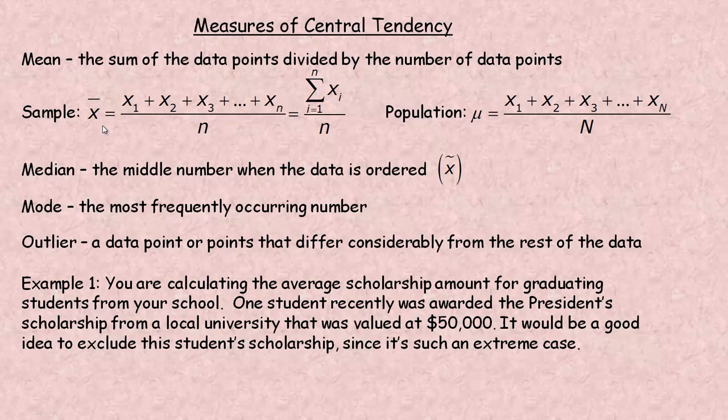In the sample mean, it's a little x with a bar over top as the symbol. The little n represents how many numbers in the sample, which would be less than the capital N, some subset of it. We add up all those numbers from x1 to the nth one and divide by n. This is the shorthand version of the formula, representing the sum of all the x's from 1 up to n divided by n.